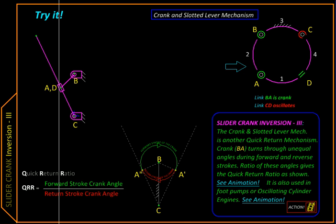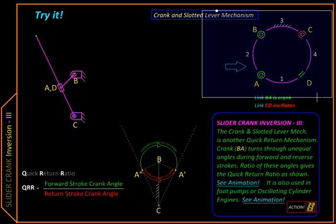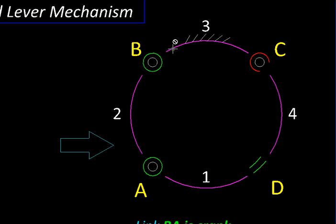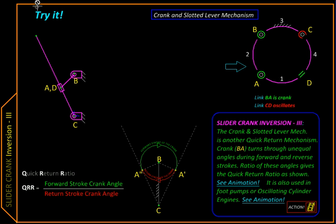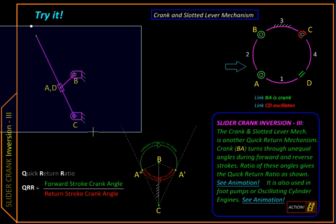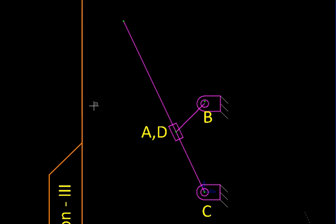So here is its schematic representation. On one side of this fixed link we have a fully rotating pin, so on this side we will get a crank, while on the other side we have a partially rotating pin, so we will get a link which only oscillates.